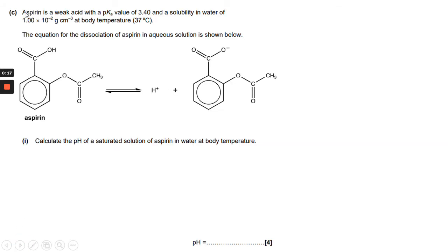Aspirin is a weak acid with a pKa value of 3.40 and a solubility in water of 1 times 10 to the minus 2 grams per cm³. There's two things we need to think about. The pKa needs to be related to H+, because we use H+ to work out the pH.